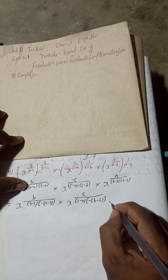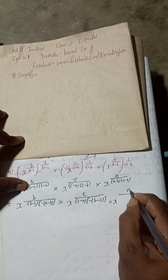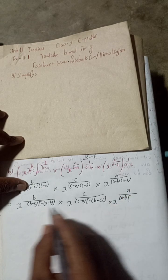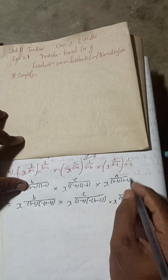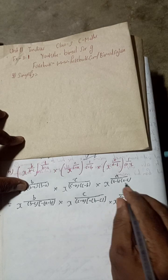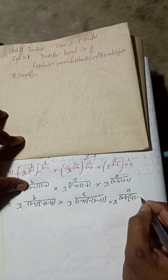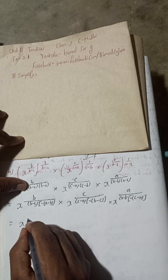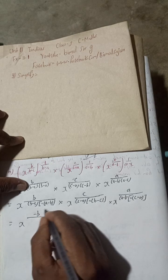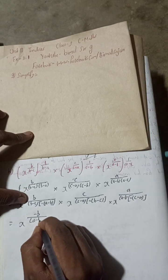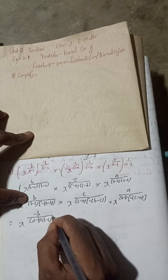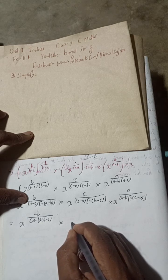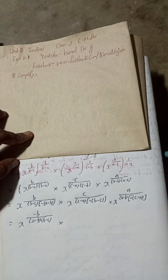For the third term, we have A over (A minus B), and here the denominator has (A minus C), but it is in the C minus A format, so I take minus common first, writing C then plus A, giving minus minus which is plus A. Now combining, we can write x to the power minus B over (A minus B)(B minus C), into the next factor.